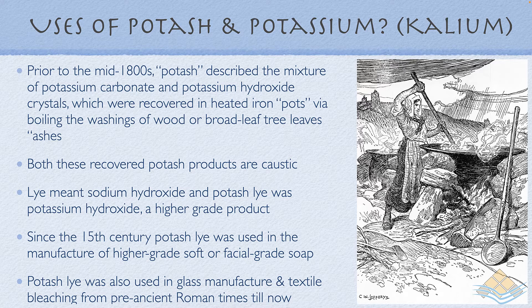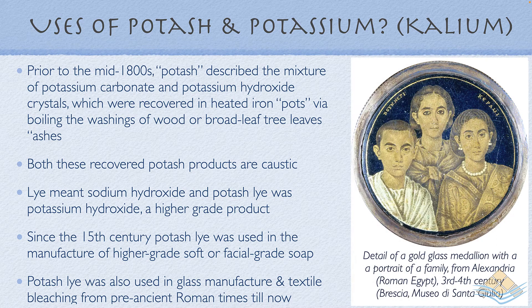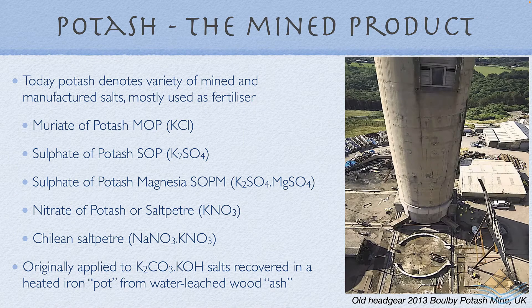Potash lye was also used in glass and is still used in glass manufacture and textile bleaching. As far back as ancient pre-Roman times, potash lye was used in glass manufacture, and here we can see a glass medallion from the third or fourth century A.D. depicting a Roman family in Alexandria in Roman Egypt. Today the term potash describes not the washings of ashes but a series of mined and manufactured salts which are used to produce a variety of fertilizers.